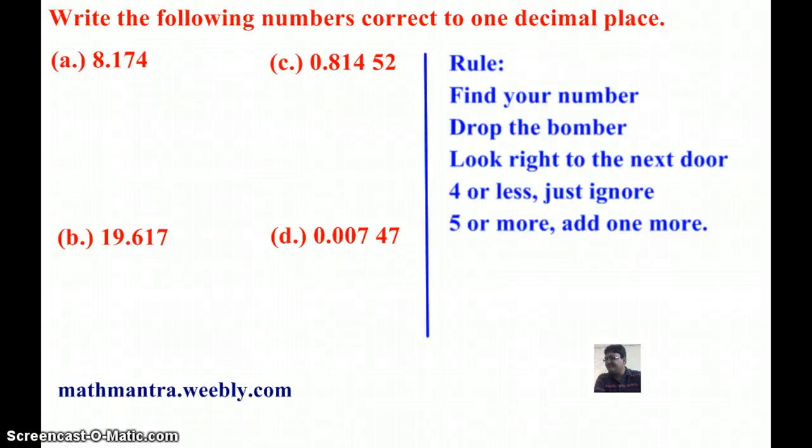In this session, we are going to learn how to rewrite the number correct to one decimal place. This process is also known as rounding off a number to one decimal place. And the rule for doing that is right here.